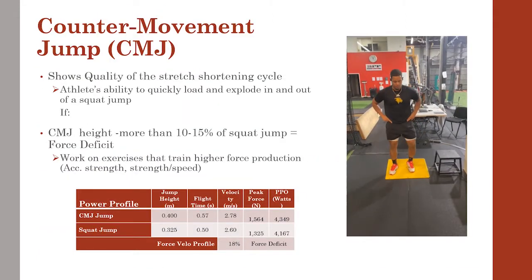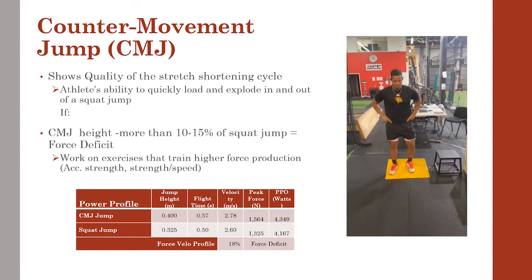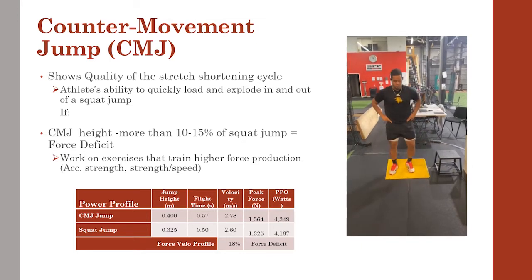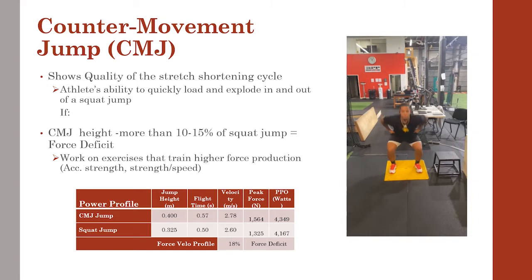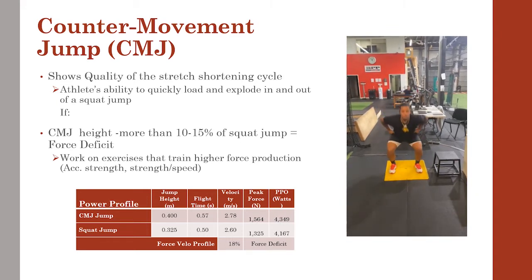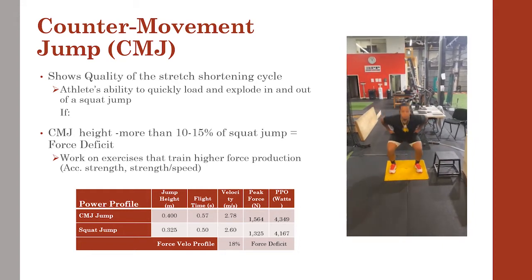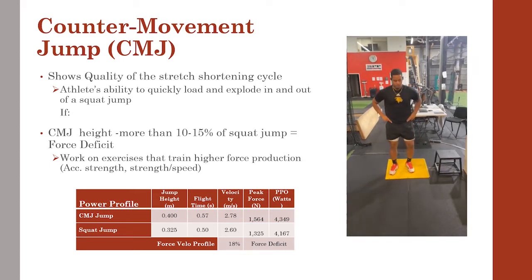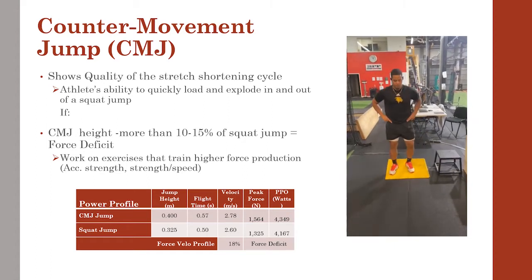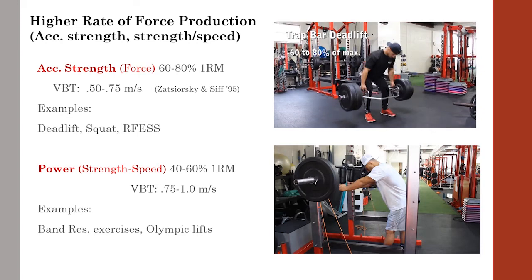Assuming no injuries or mobility issues, let's look at the CMJ first. The CMJ tells us a lot about an athlete's elasticity — their ability to flip the switch from eccentric force production, which is landing, to concentric, which is taking off again. This is also known as the amortization phase. A well-balanced athlete's CMJ should be approximately 10-15% higher than their squat jump. An athlete showing greater than 15% — for example, roughly 18% higher CMJ than squat jump — is in a force deficit.